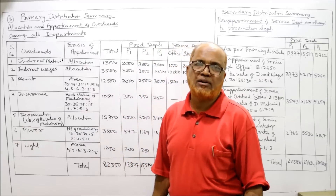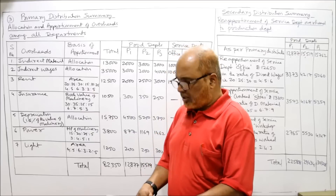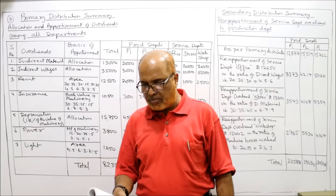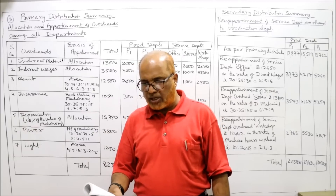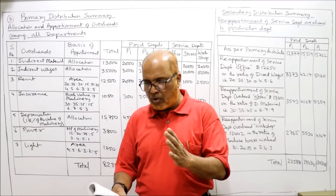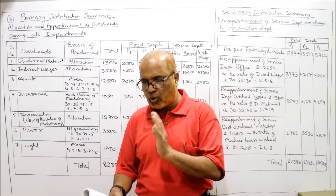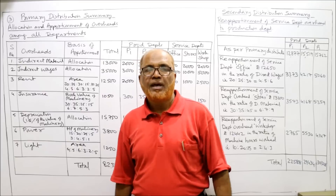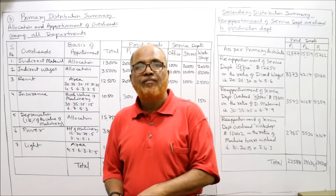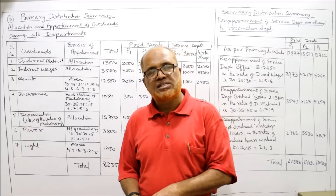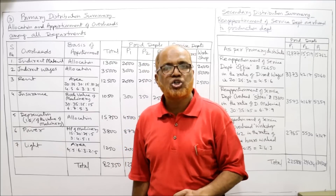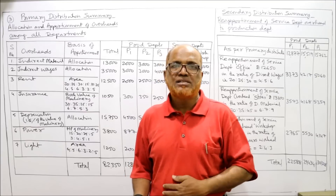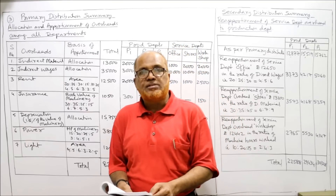Problem three: a company's production for the year ending 30th June 1979 is given. Production departments are P1, P2, P3, and the service departments are Office, Stores, and Workshop — three production departments and three service departments.